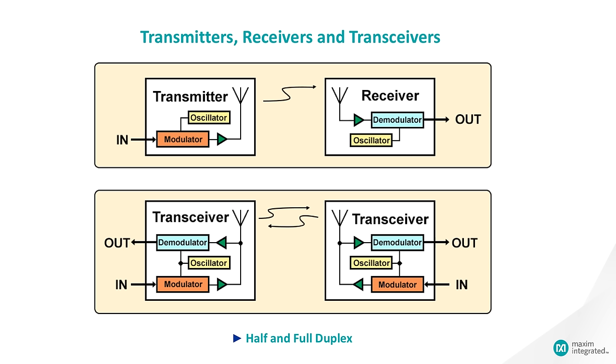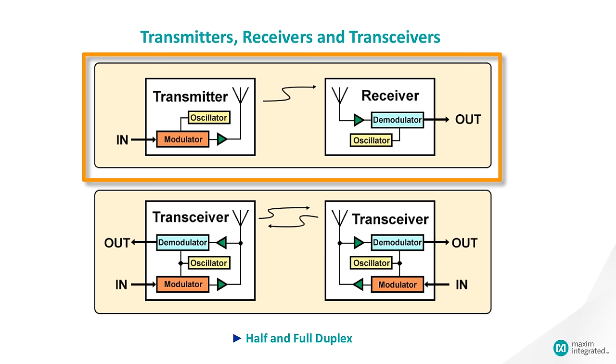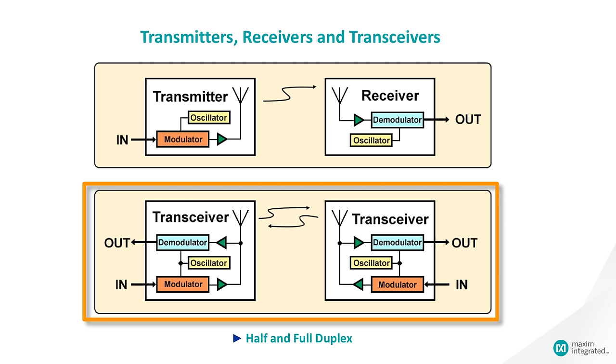The two basic functions in a communication system are transmit and receive. The system in the diagram at the top is a simple one-way communication channel, which contains one transmitter and one receiver. The system in the bottom diagram is a two-way communication channel, which can send information in both directions. When a link can both transmit and receive information, it is called a transceiver, which is a simple combination of the words transmitter and receiver.